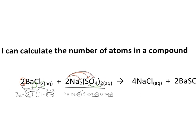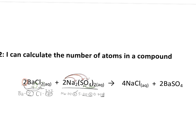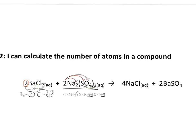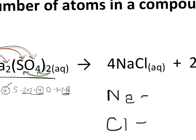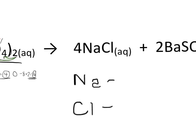Moving to the right side, in this compound we have two elements: sodium and chlorine. If we zoom in, we see that there are no subscripts, so we can assume the subscript on Na is one and on Cl is one. Taking the coefficient and multiplying it by both subscripts — anything times one is itself — so four times one gives us four sodium atoms, and four times one gives us four Cl atoms.